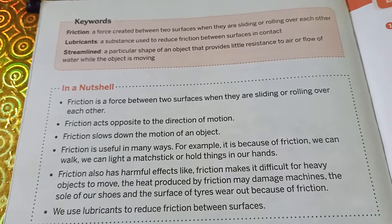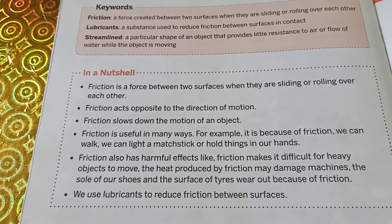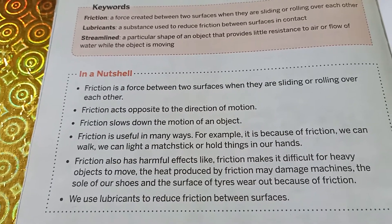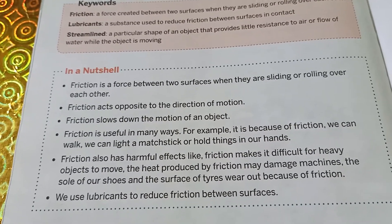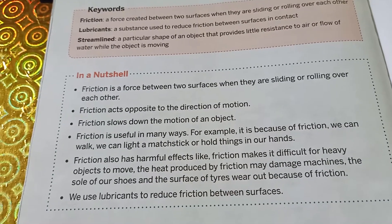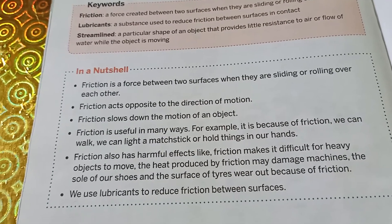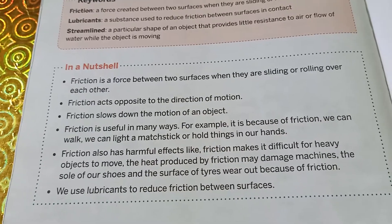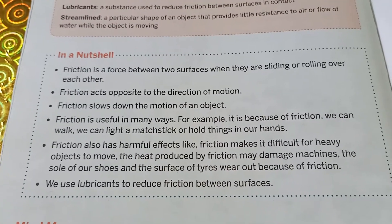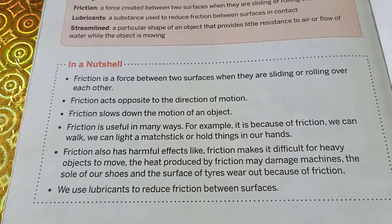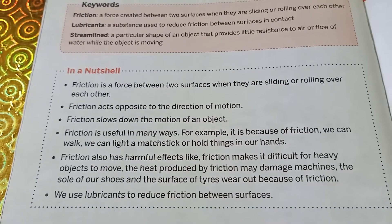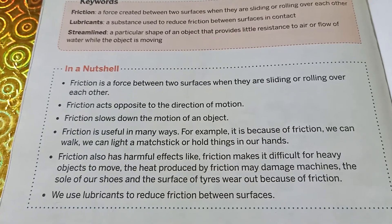Another way by which we can reduce friction is by using wheels. When we use wheels, the wheel has a circular surface, therefore it reduces the surface of contact and hence less friction will be there, thereby making it easier to move things around when wheels are attached.